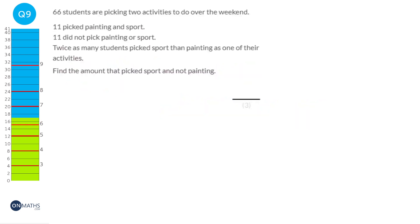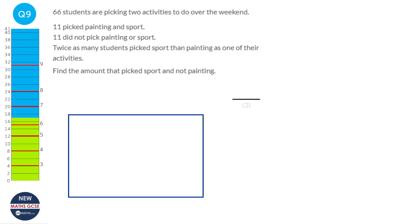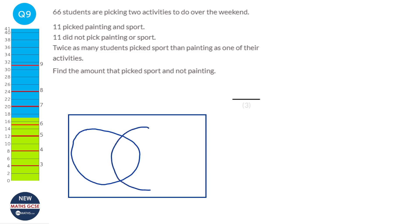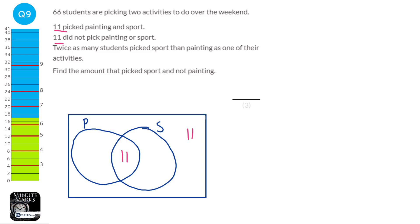This question probably needs a Venn diagram. Two activities were either painting (P) or sport (S). 11 picked painting and sport — that goes in the middle. 11 didn't pick painting or sport — they sit on the outside. The problem is it says twice as many people picked sport than painting as one of their activities, meaning the total number in the sport circle is twice as big as the total number in the painting circle.